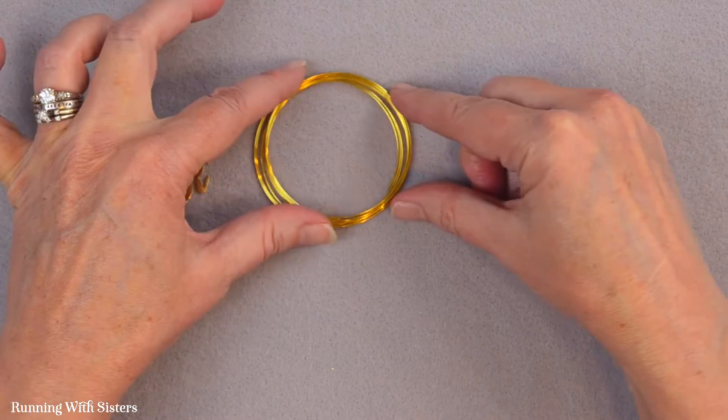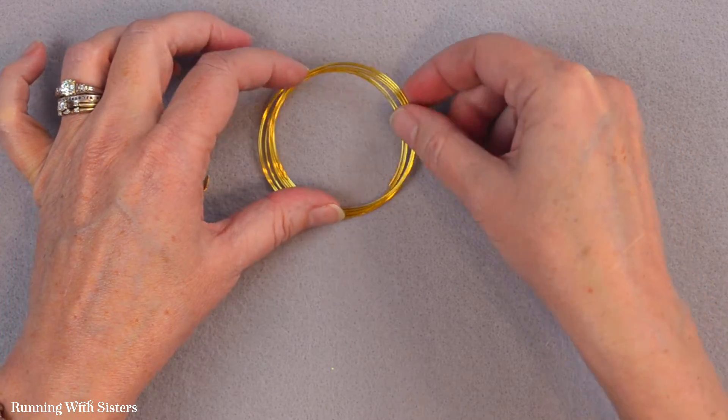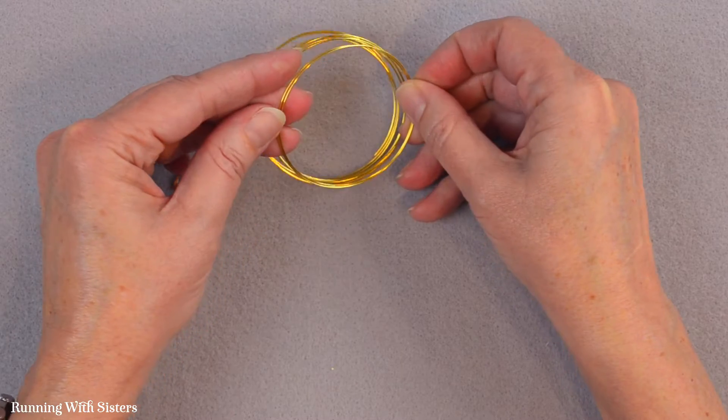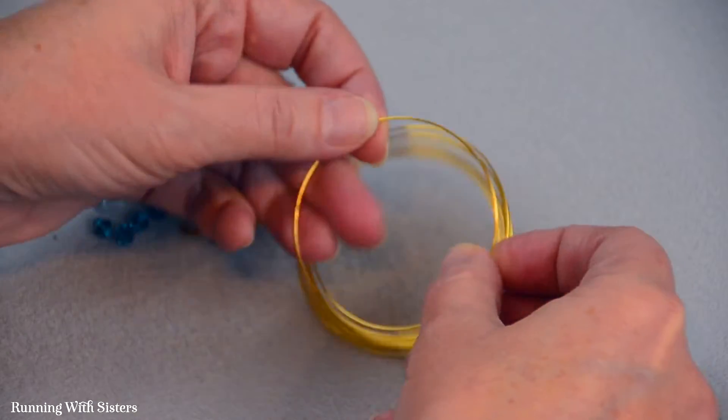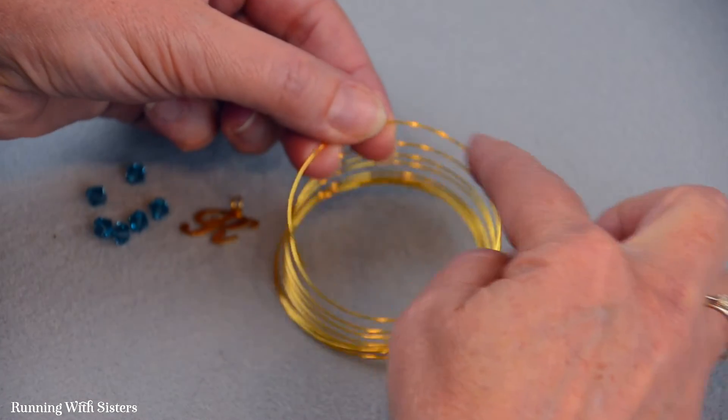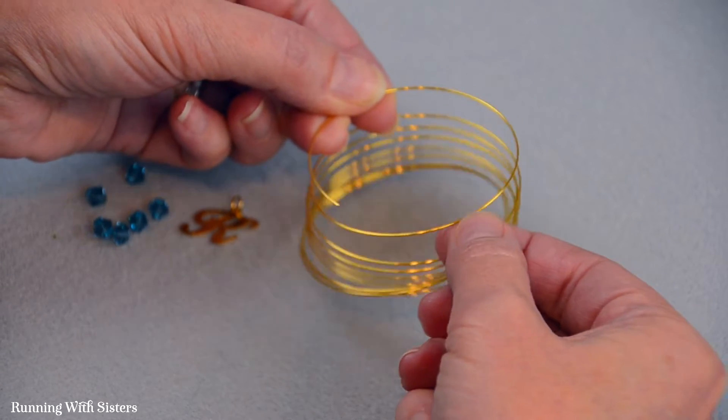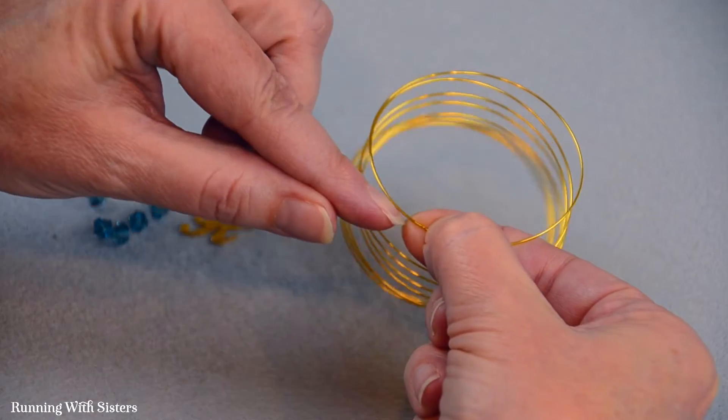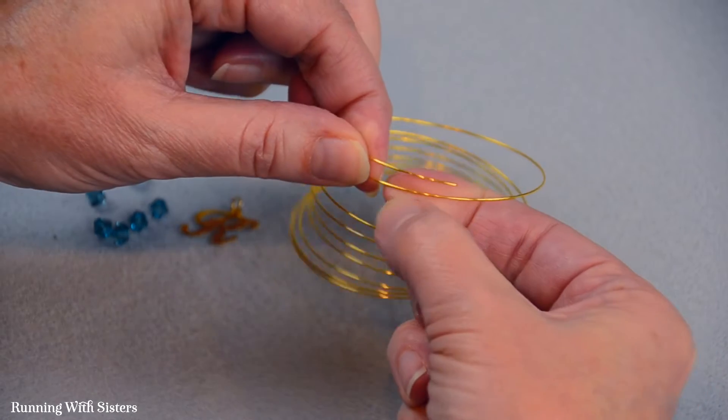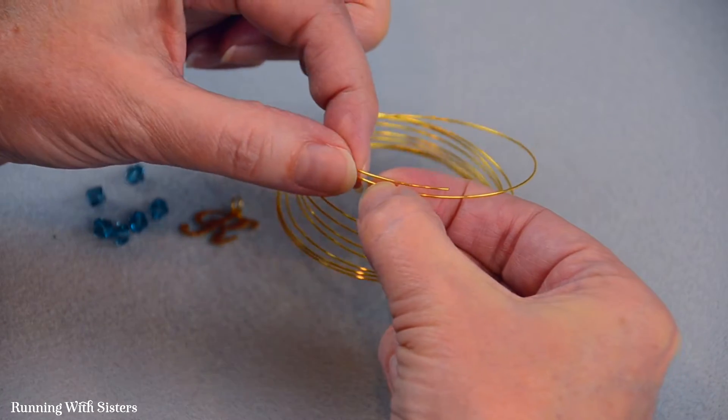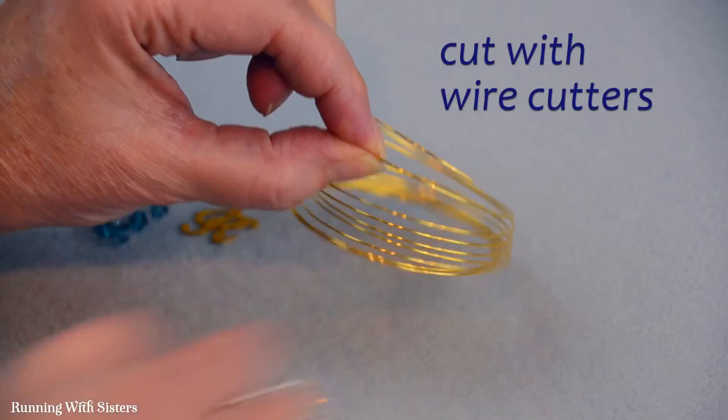The first thing we're going to do is cut a loop of the memory wire. To do that I'm going to find the end of the memory wire here. That's the end. I'm going to go all the way around once. So that would be to here. I'm going to give it a little room for overlap. So I'm going to go past that beginning point to here. And I'm going to cut that with wire cutters.